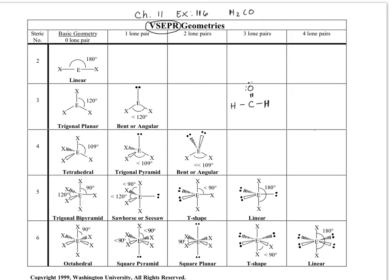So how are we going to determine what the geometry is? The simplest way is to determine the number of electron groups around the central atom. Everything that we're doing is with respect to our central atom, which is carbon in this case. So this has one electron group, two electron groups, and three electron groups. The electron group can refer to a double bond,